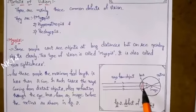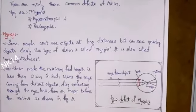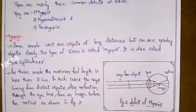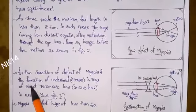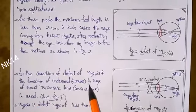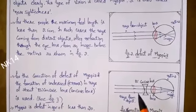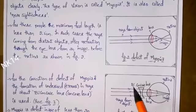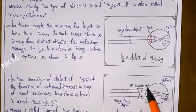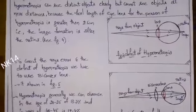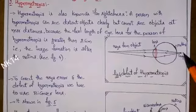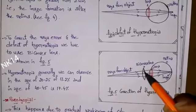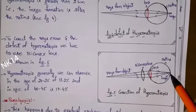In myopia, rays coming from the object form in front of the retina after passing through the lens, as shown in the diagram. To correct this defect, a biconcave lens is used — rays pass through the biconcave lens and form exactly on the retina. Hypermetropia is the exact opposite: the image forms after the retina, and to correct it a biconvex lens is used so the image forms exactly on the retina.